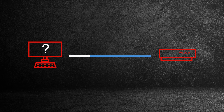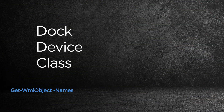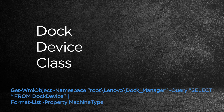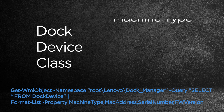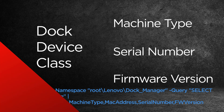IT administrators can perform WMI queries via PowerShell. There are several WMI classes you can access through the WMI queries. The Dock Device class is created when a supported dock is attached. Properties queryable inside the class include machine type, serial number, and firmware version.